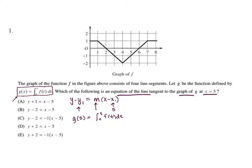This is where we find our area. Keep in mind that when we have it defined like this, this is implying area. We need to find the bounded region from 0 to 5. For this first portion, we have a trapezoid, so we do one-half the height, which is 1, times the sum of the bases, 1 plus 2, giving us three-halves.